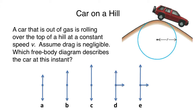Same ideas — we're going to apply them in a different situation. Here's a car on a hill. Your car is out of gas and it's rolling over the top of this hill at a constant speed V. Assume drag is negligible. Which free body diagram describes the car at that instant when you're at the top of the hill? Start from everything you know: we're at a constant speed V, so it's uniform circular motion. Carefully find the directions of all the forces and accelerations, then draw the free body diagram.